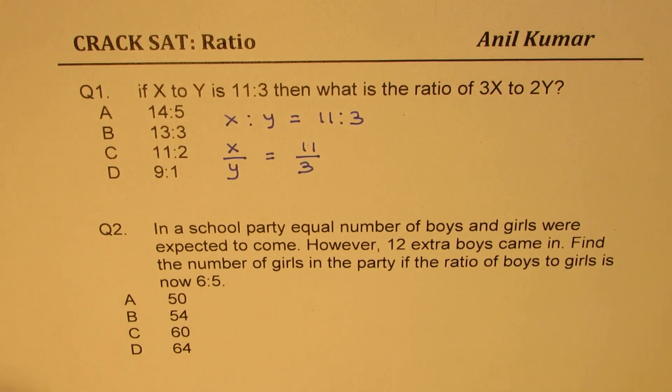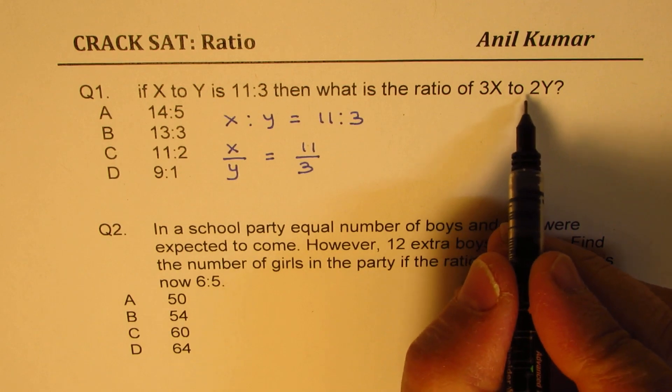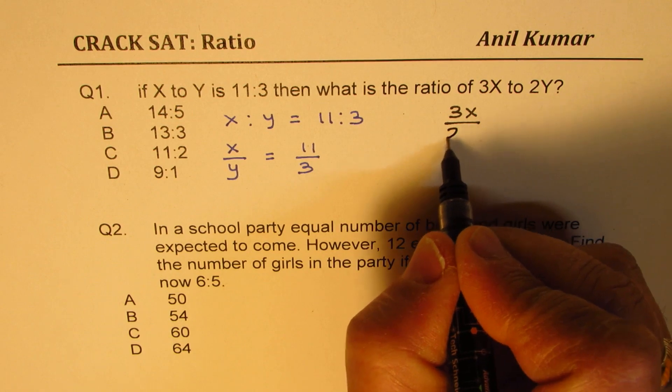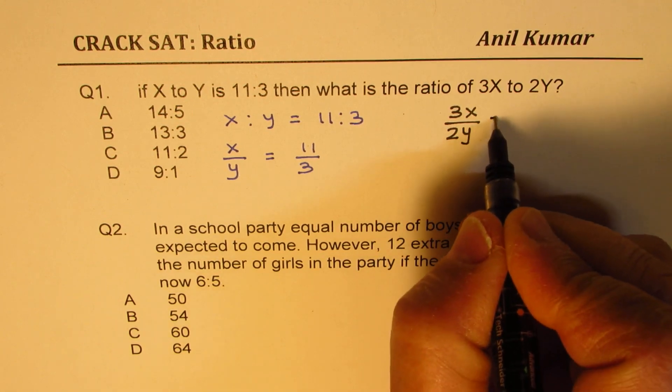On the other side, we need to find the ratio of 3X to 2Y. So let me write this as 3X over 2Y. We need to find what this is.